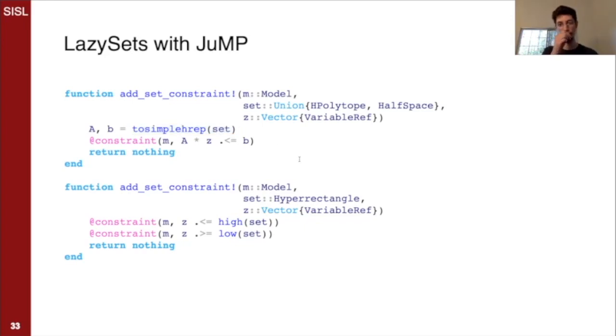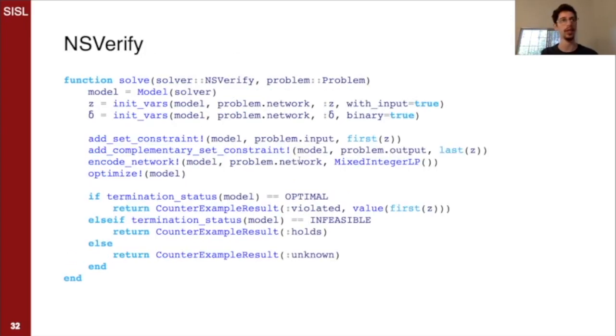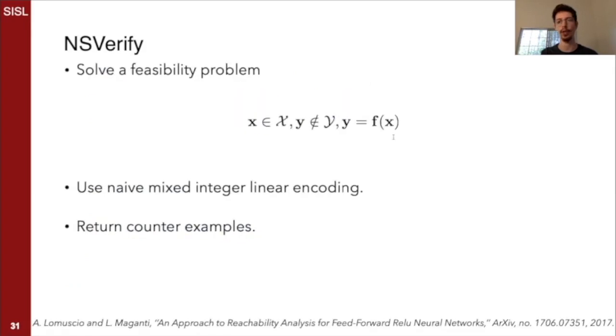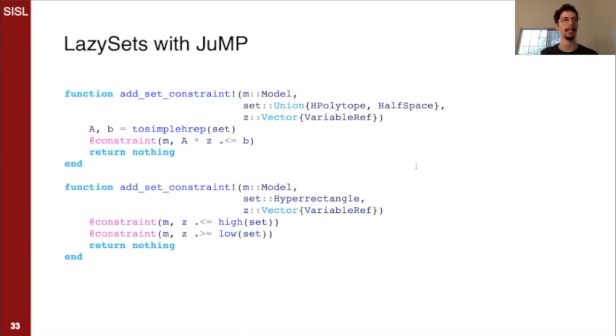And we use to_simple_hrep, for example, here to constrain z to lie within that set. So add_set_constraint on a particular set will constrain the variable z, the input variable in this case, this is the first variable, to lie in the set that we like. And so, again, multiple dispatch along with the functionality in lazy sets makes this endlessly expressive and makes the code very readable, very simple, very modular.